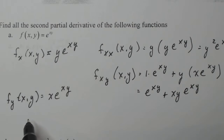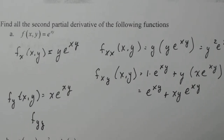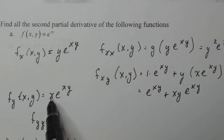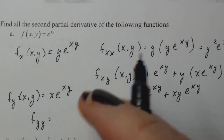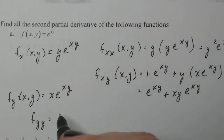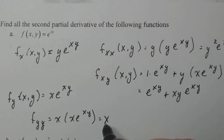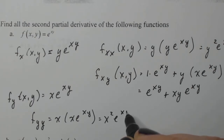Now coming down to f sub y, I want to do f sub yy. If I take the derivative of x e to the xy with respect to y, x is a constant so it just comes along. The derivative of e to the xy with respect to y gives x, so it's going to be x squared e to the xy.